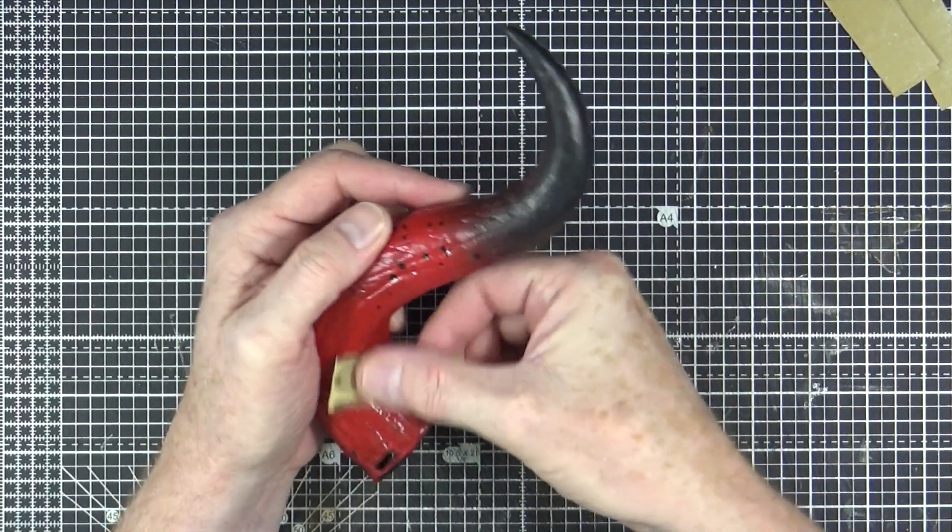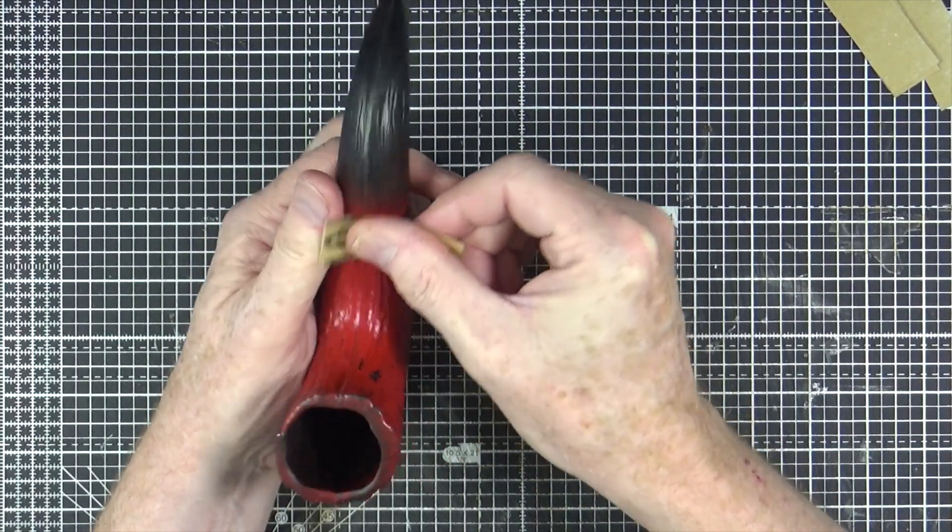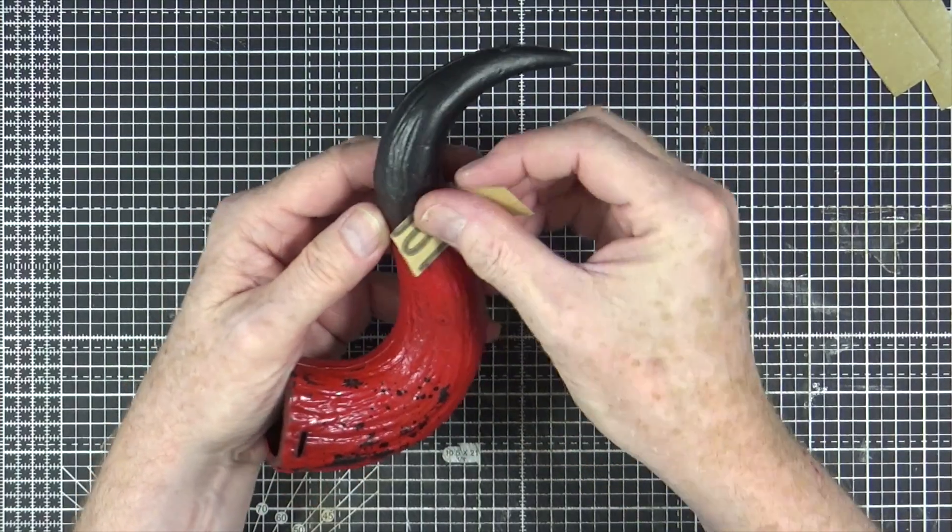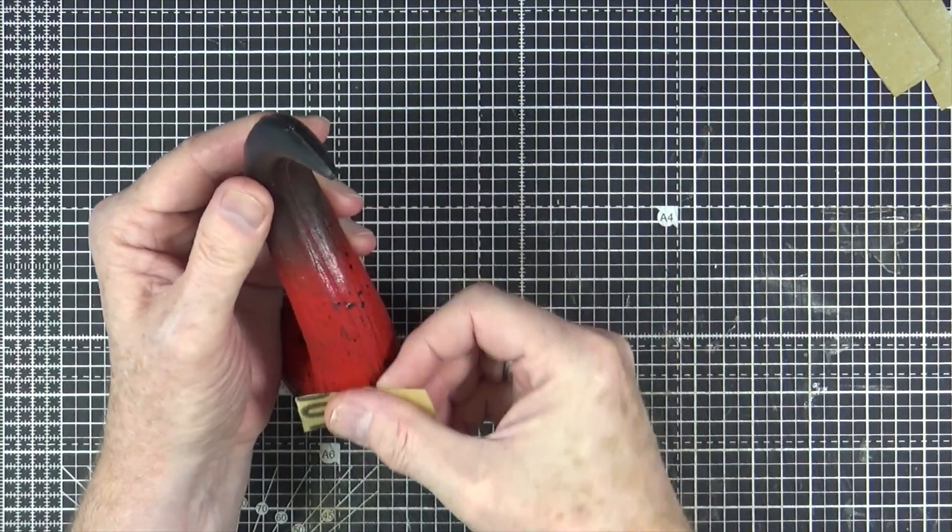I'm not going to try and remove all of the red. I'm just going to take a little bit off the top, just to give it a bit of a key for the gesso that I'm going to use in a moment.